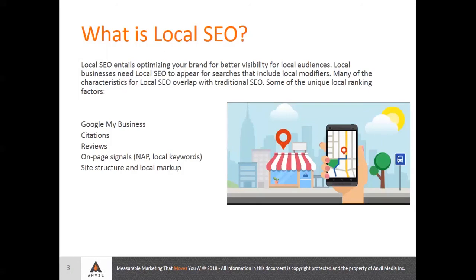Many of the characteristics for local SEO overlap with traditional SEO. But we're going to be focusing on what are some of the local factors that are unique to local. We'll be talking mostly about Google My Business and the importance of that, understanding citations and how you can check your citations across the web, the importance of reviews and how you can offset some of the negative press from bad reviews. Those top three are kind of your external things. Then we'll switch over to your actual website, talking about on-page signals — your name, address, phone number, local keywords — and then site structure and local markup.